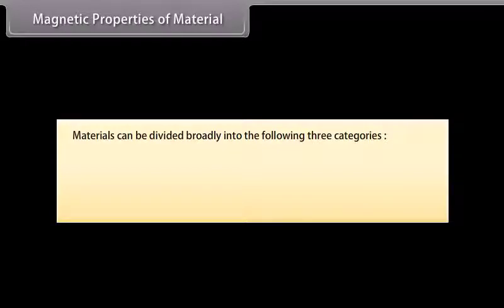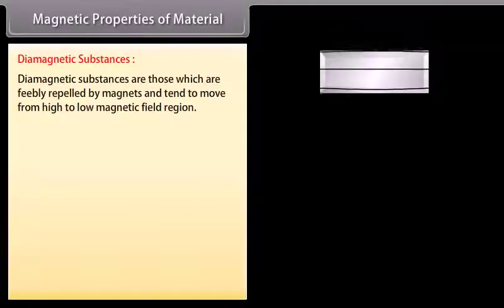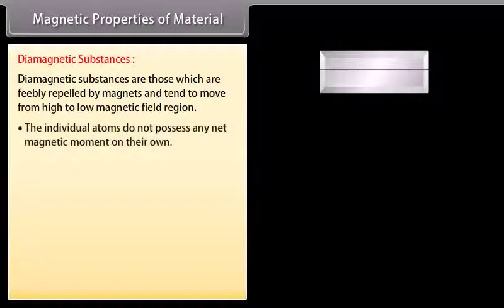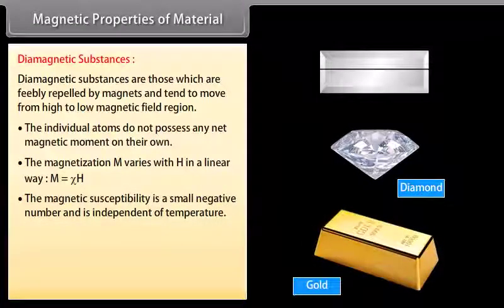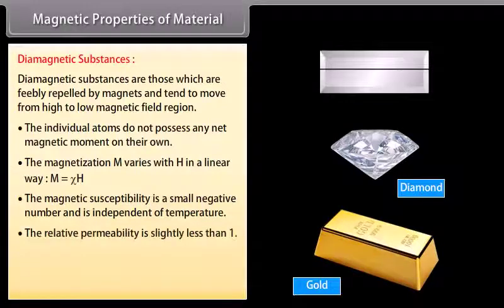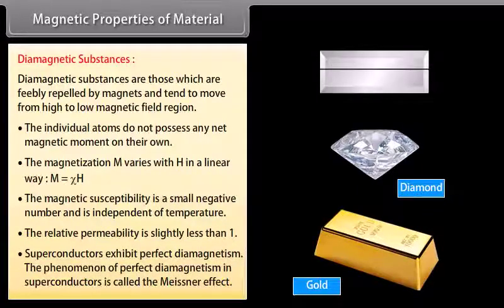Magnetic Properties of Materials: Materials can be divided broadly into three categories. Diamagnetic substances are those which are feebly repelled by magnets and tend to move from high to low magnetic field regions. The individual atoms do not possess any net magnetic moment. The magnetization M varies with H linearly: M = chi·H. The magnetic susceptibility is a small negative number and is independent of temperature. The relative permeability is slightly less than 1. Superconductors exhibit perfect diamagnetism, and this phenomenon is called the Meissner effect.